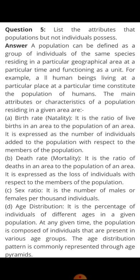A population is a group of similar individuals living in a particular area — for example, human beings, cows, dogs, buffaloes, etc. The first attribute is natality, which is the birth rate — how many organisms of a particular population are born in a particular area in a particular time.